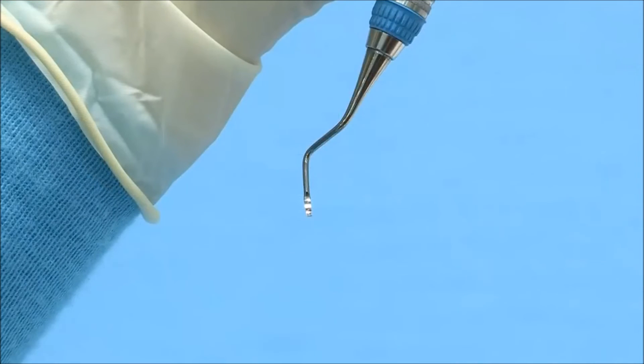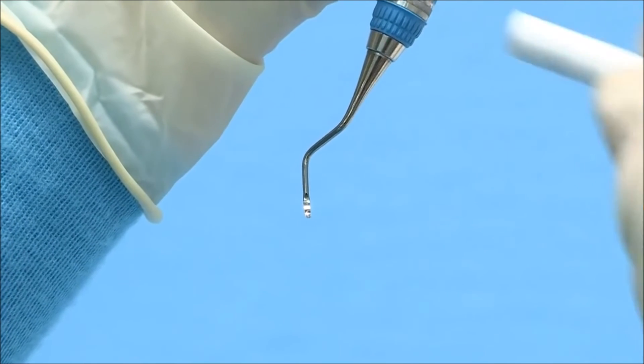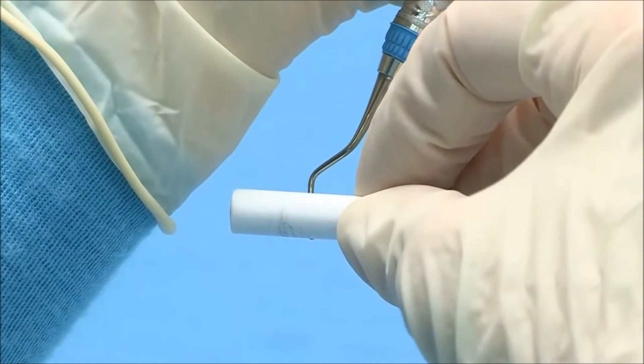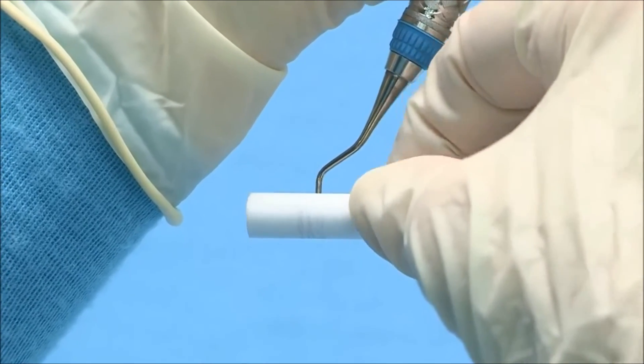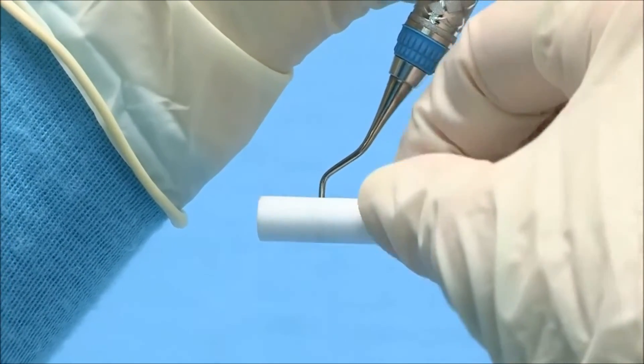To finish sharpening a universal curette, hold the blade at eye level with the terminal shank at 12 o'clock with the toe pointed towards you. Position the cylindrical stone along the face of the instrument at 3 and 9 o'clock. With slight downward pressure, roll the stone along the face from the heel to toe, removing any wire edges.